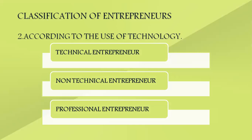The second classification is according to the use of technology: technical, non-technical, and professional entrepreneurs. A technical entrepreneur is skilled as a craftsman and concentrates more on production activities, focusing on improving product quality. Non-technical entrepreneurs are more concerned with marketing activities and have different strategies to promote their business. A professional entrepreneur starts a business, runs it, and then sells it off after some time.